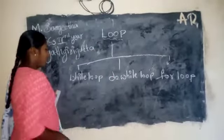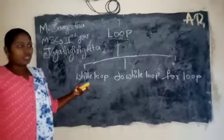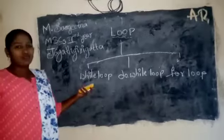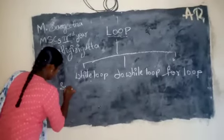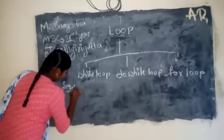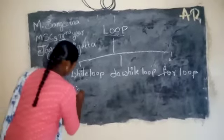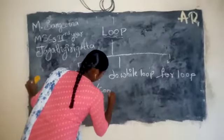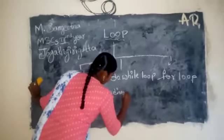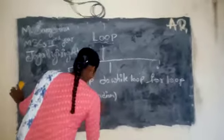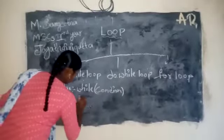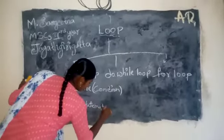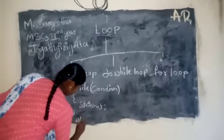First is the while loop. While loop means it is a pre-test and it is an entry control loop. The syntax for the while loop is: while condition, then statement, then out of loop.